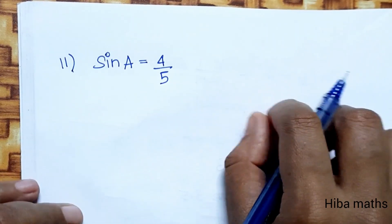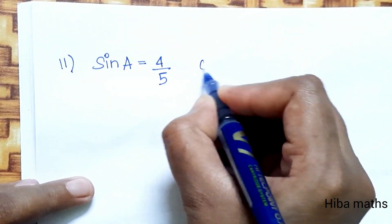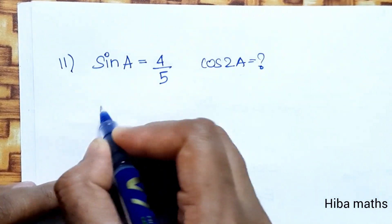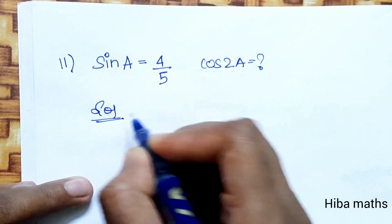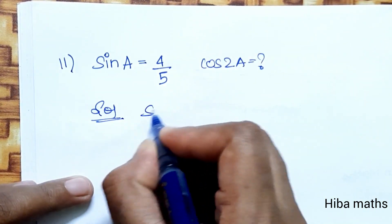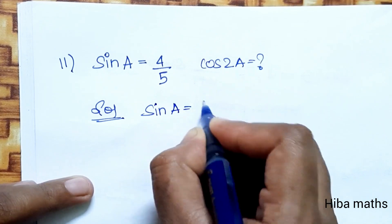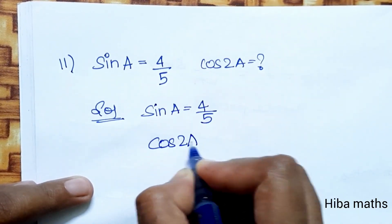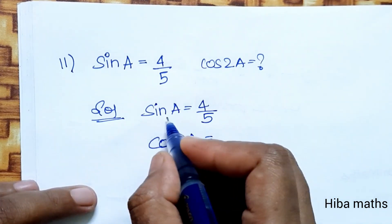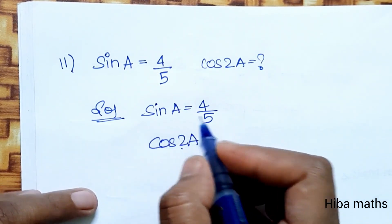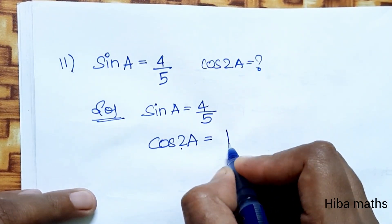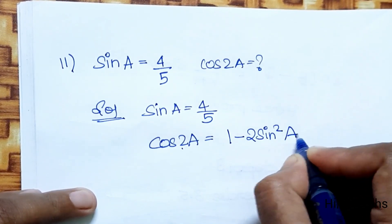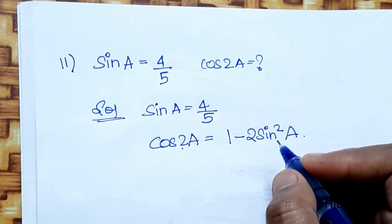Second subdivision: sin A is equal to 4 by 5. Find cos 2A. The formula for cos 2A in terms of sin A is: cos 2A = 1 − 2 sin²A. When you learn all the formulas, you can learn how to use each one.